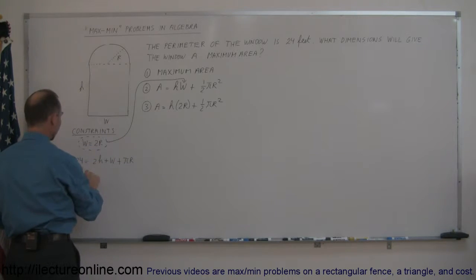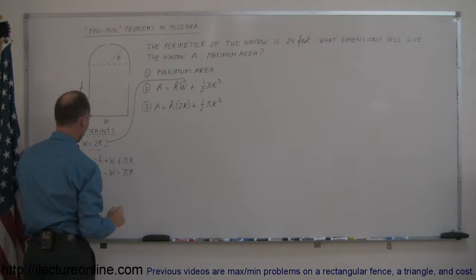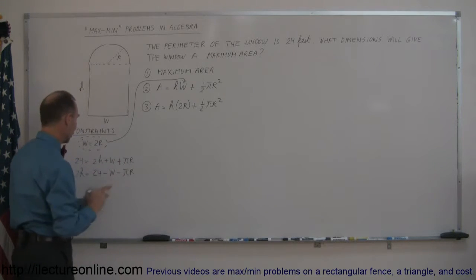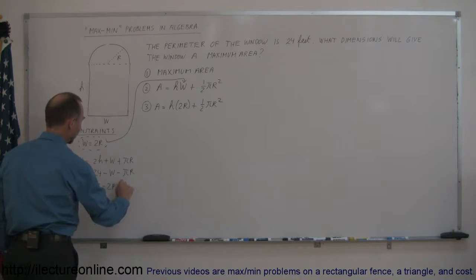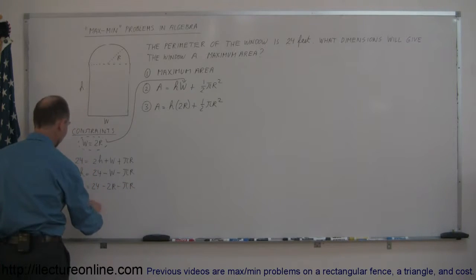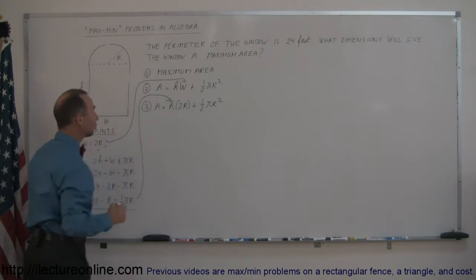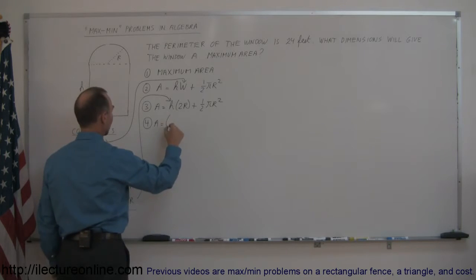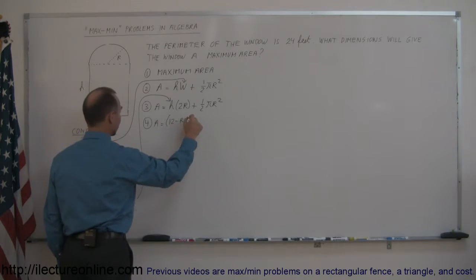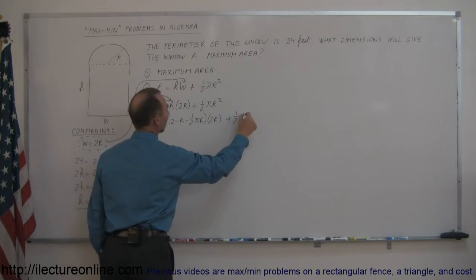So 2h is equal to 24, then move the other two terms to the other side: minus w and minus pi r. The w here we know is equal to 2r, so let's replace that. So 2h is equal to 24 minus 2r minus pi r. Dividing both sides by 2, we get h is equal to 12 minus r minus one-half pi r. This allows us to substitute that into the equation to get rid of h. So now the area is equal to — instead of h we write 12 minus r minus one-half pi r — times 2r, plus one-half pi r squared.